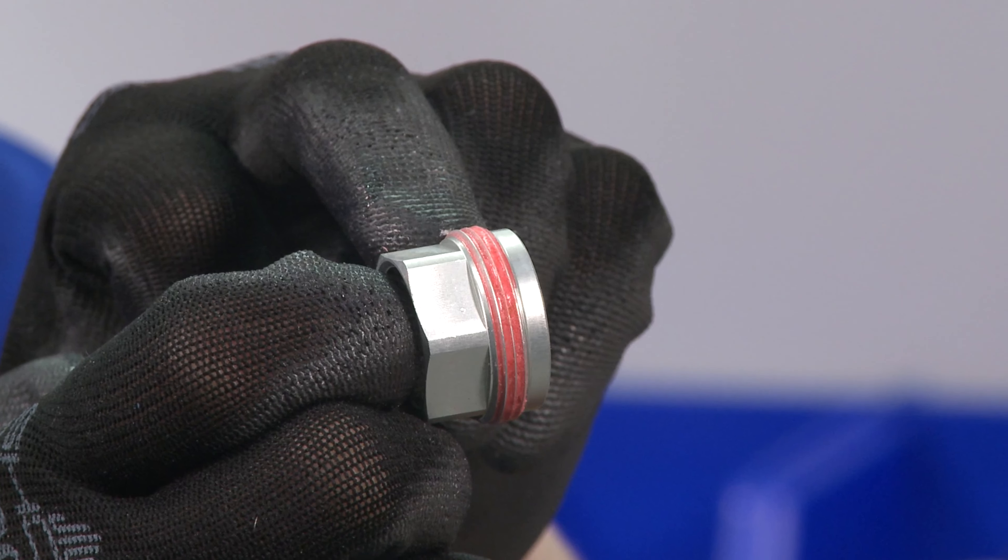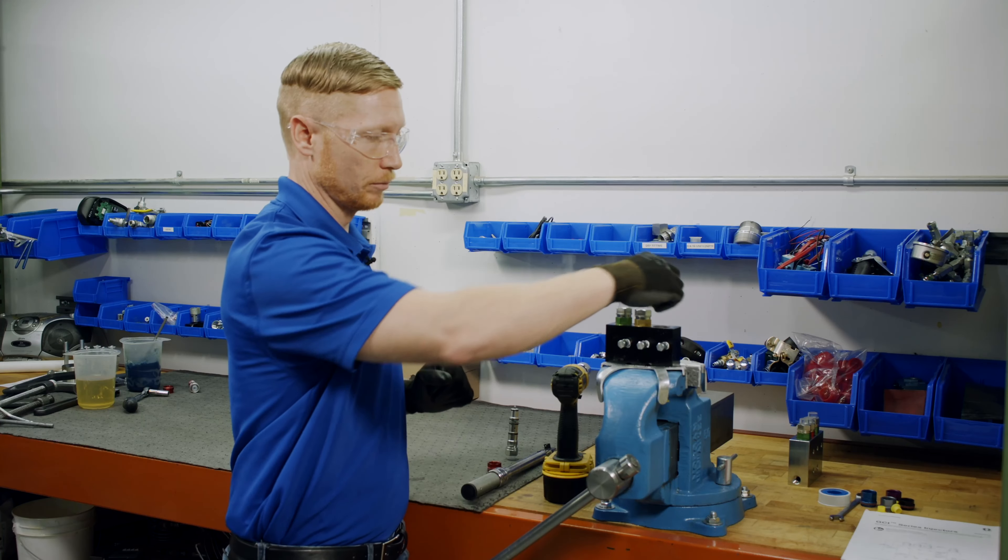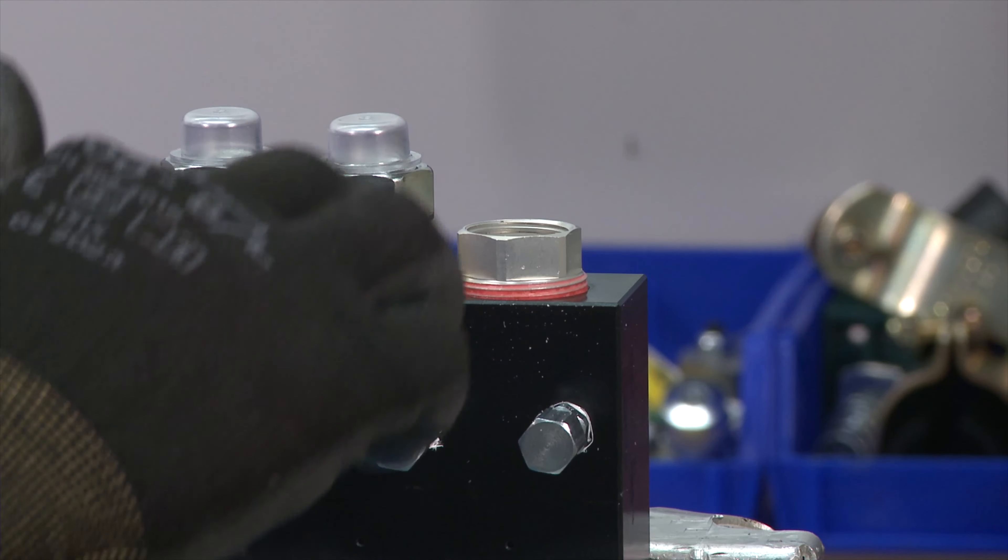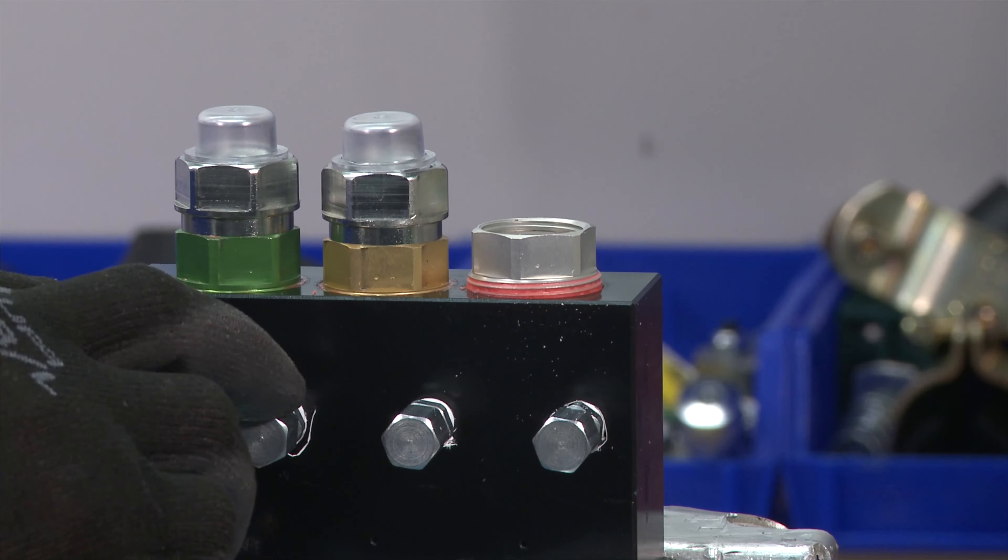You'll notice there's a little bit of thread adhesive that's going to come on the spacer. We do that so that way the spacer stays on the manifold when it comes time to actually change out one of the cartridges out in the field.